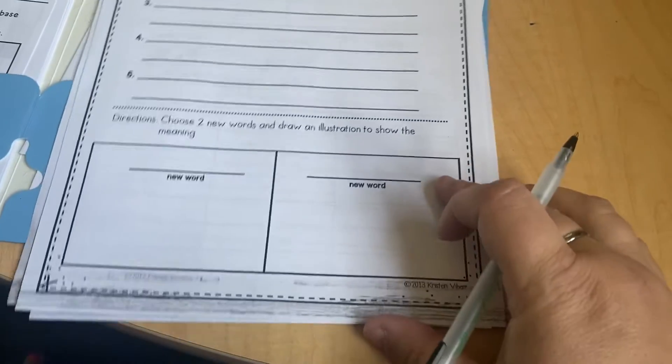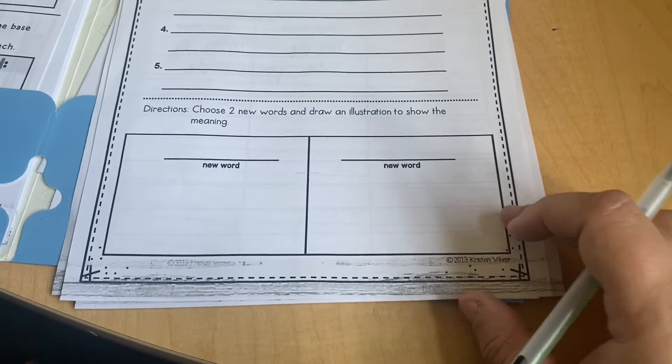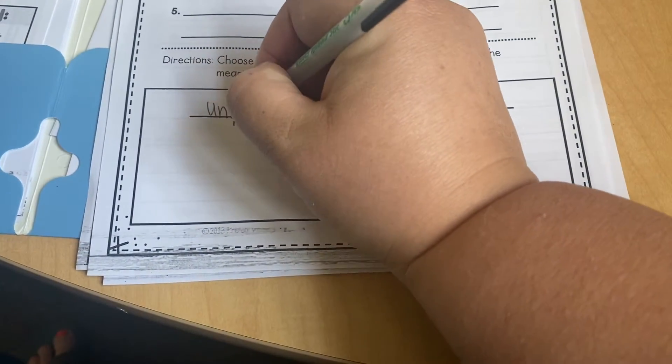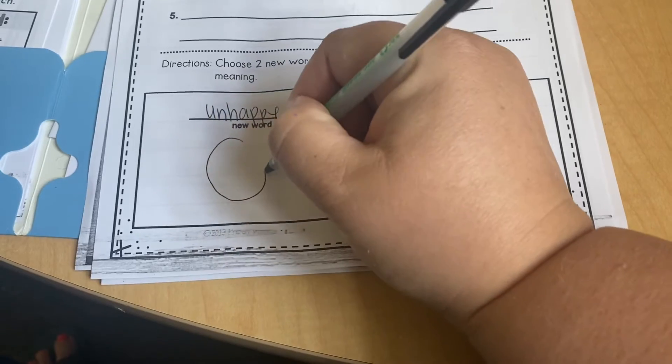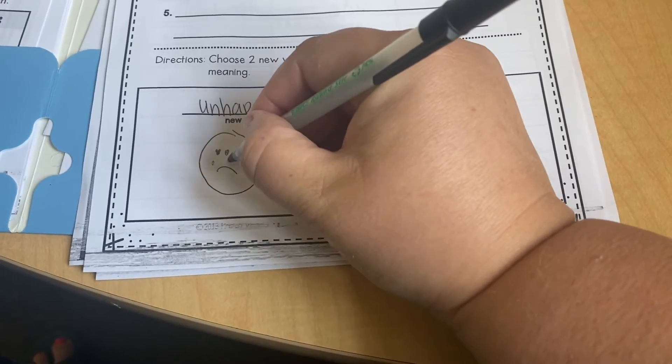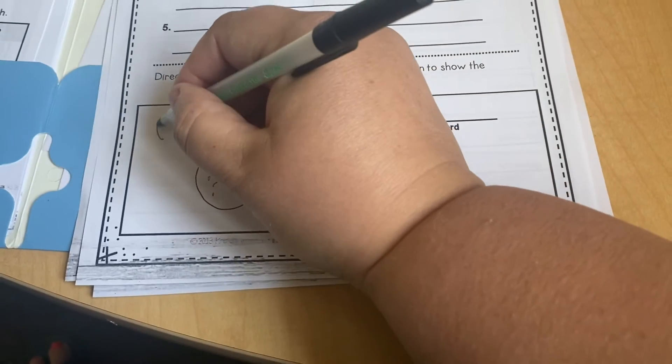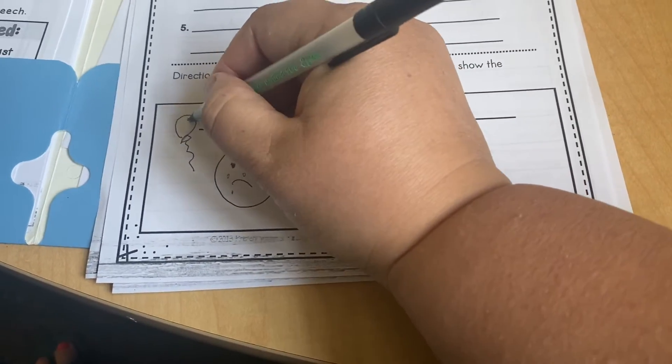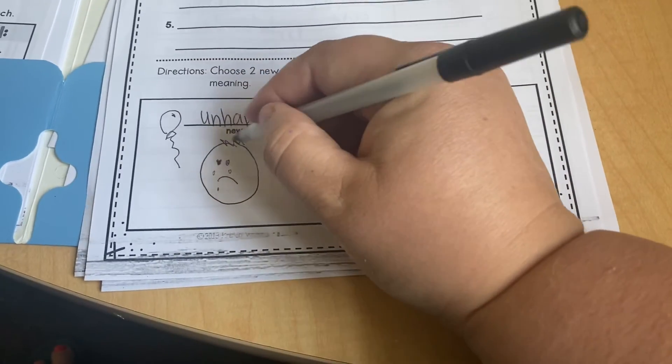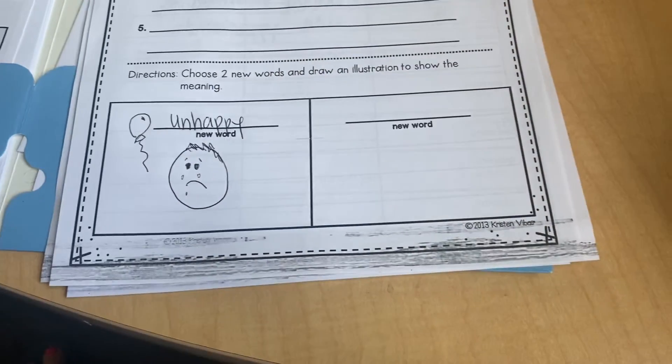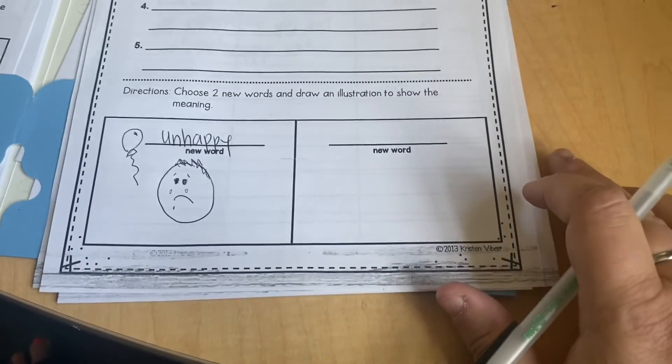And down here it says, choose two new words and draw an illustration to show the meaning. So maybe my word is unhappy. Then I'm going to draw a picture that illustrates unhappy. Maybe this kid's crying. Maybe he lost his balloon. His balloon's flying away. So he's unhappy. Okay, you get to choose your words.